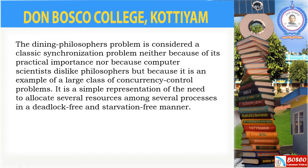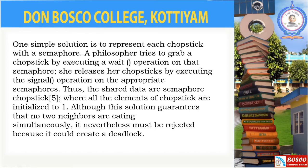In the Dining Philosopher Problem, there will be n number of philosophers sitting at a round table. They have to take two chopsticks when they are hungry, otherwise they will be thinking. At a time they can have only one chopstick, and with only one chopstick they can't eat their food. So they will be entering into deadlock. In this algorithm we will be using two operations: wait and signal. Wait is to decrement the semaphore by one and signal is for incrementing the semaphore by one.